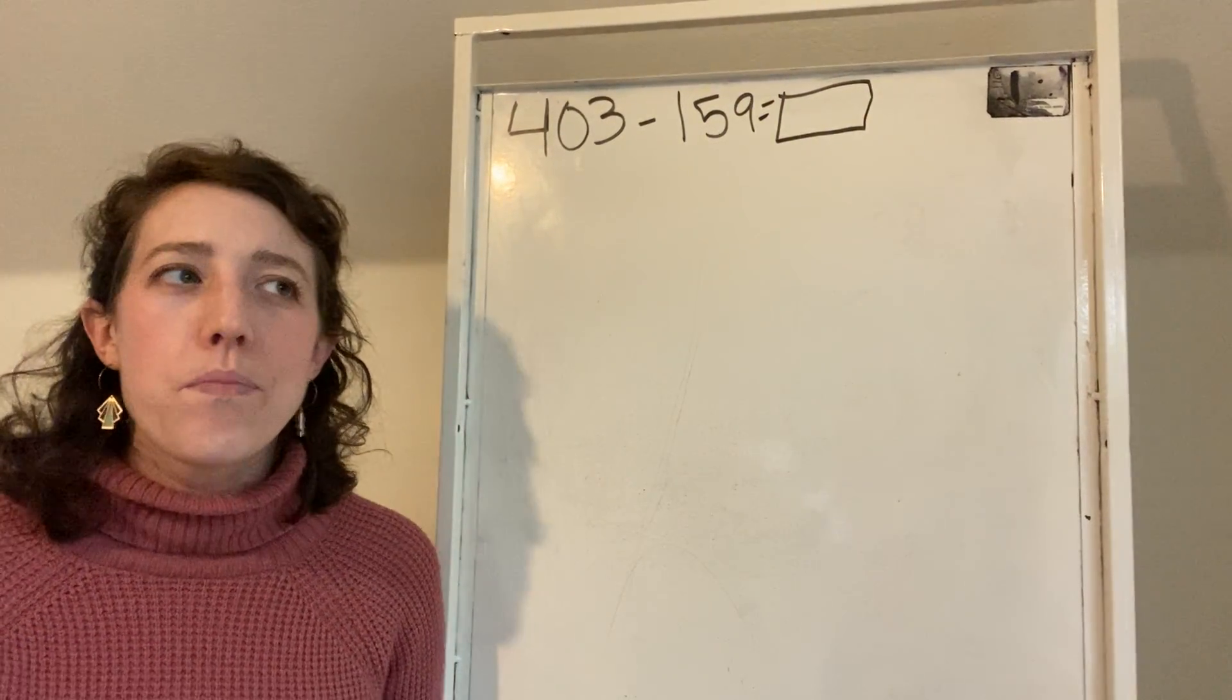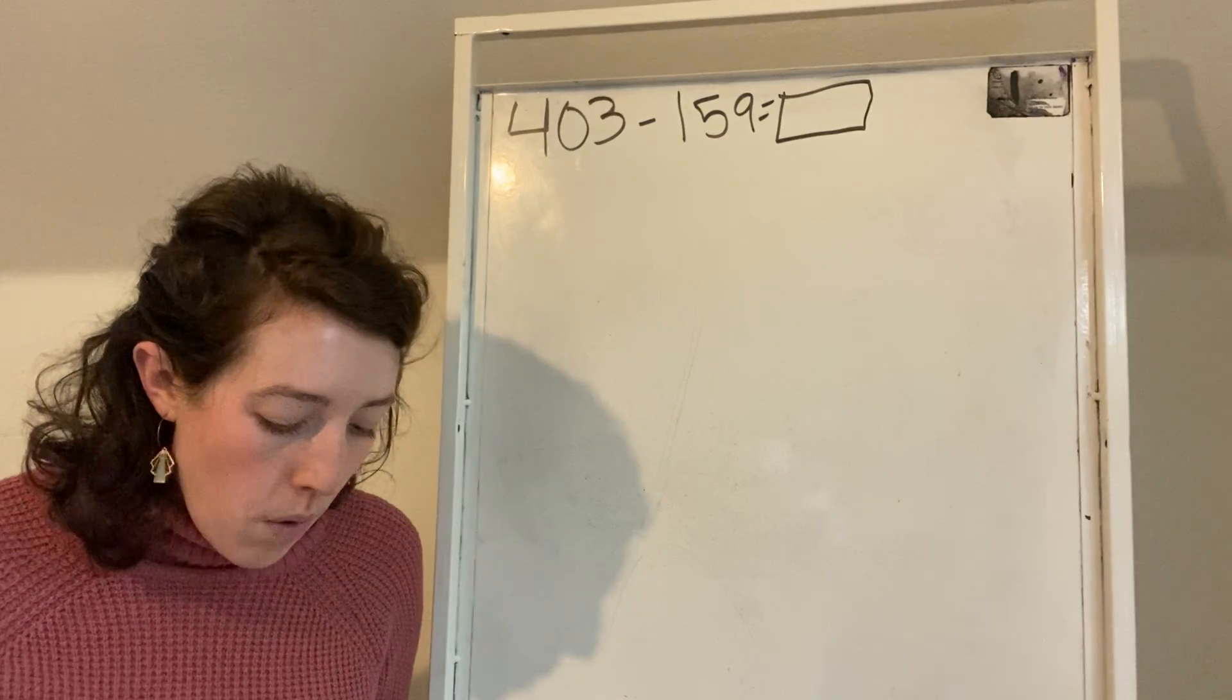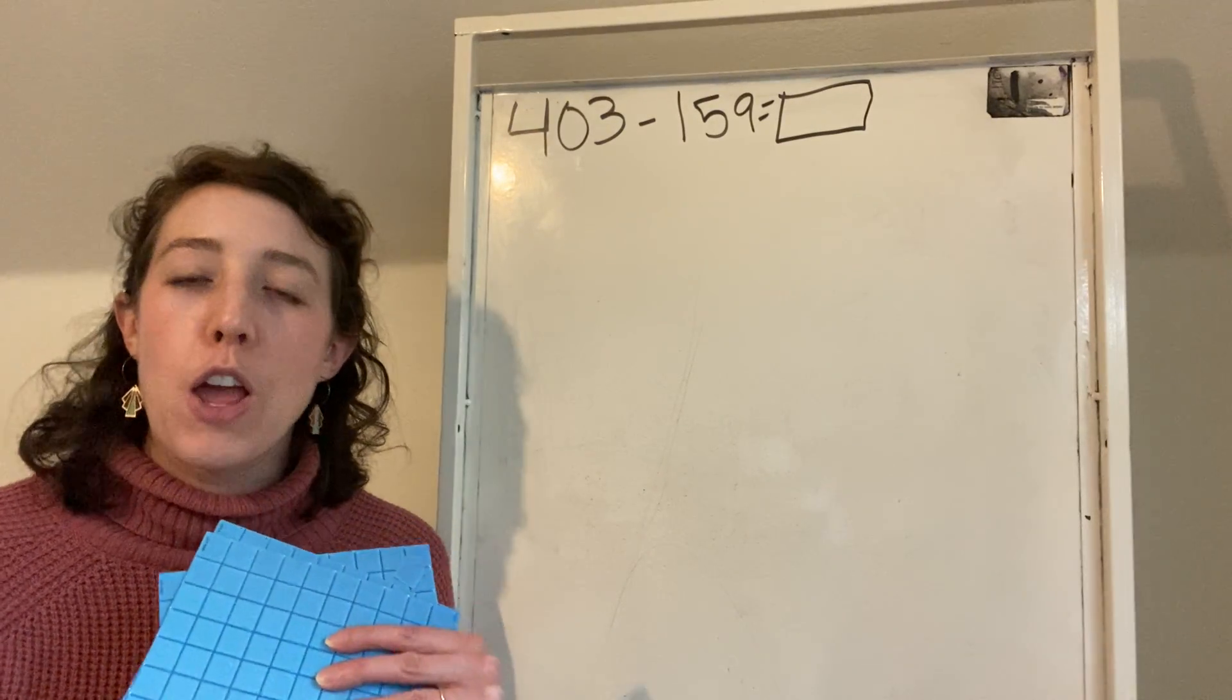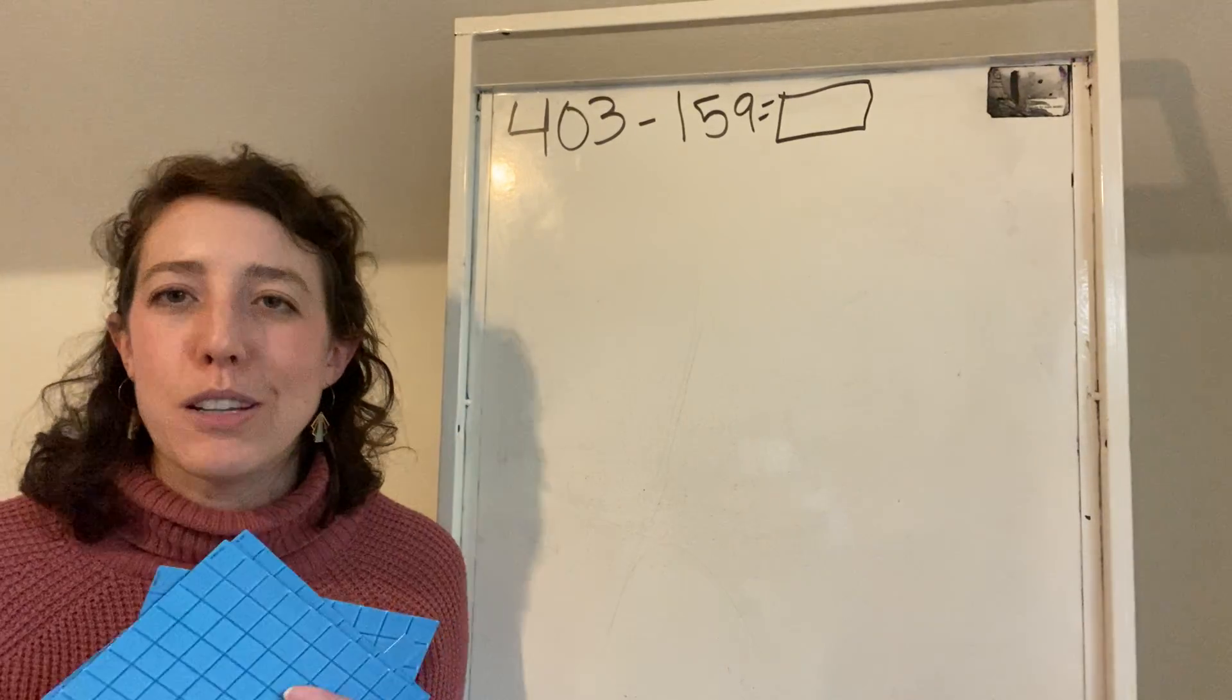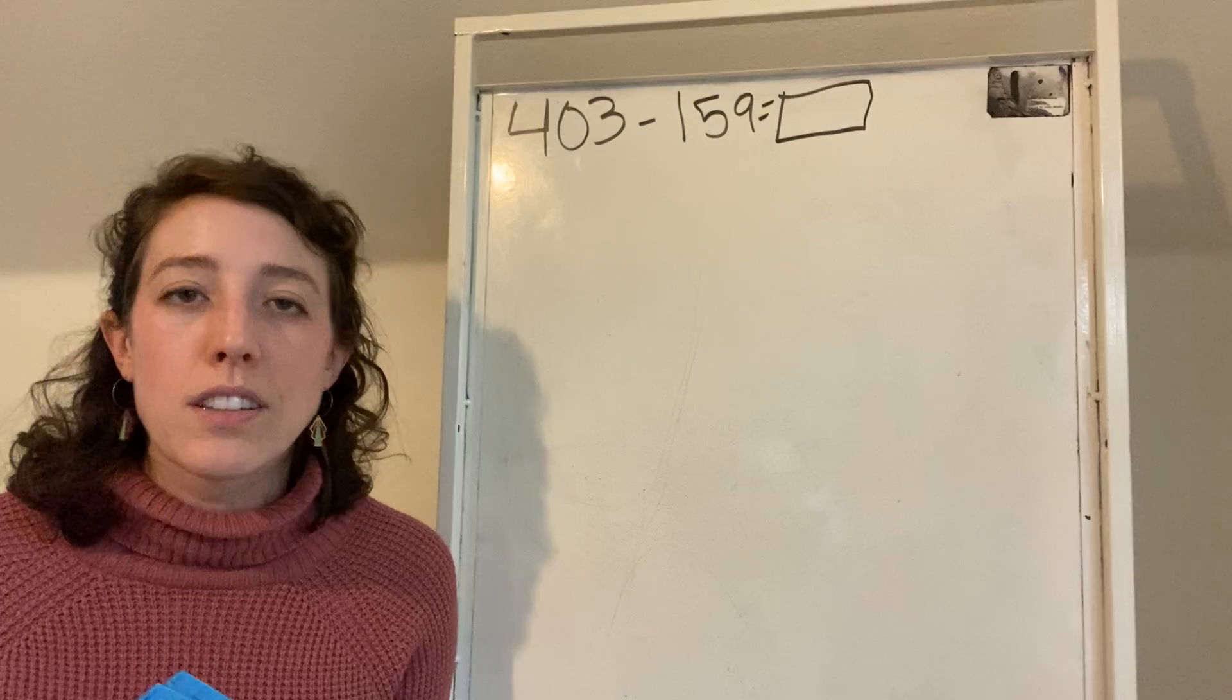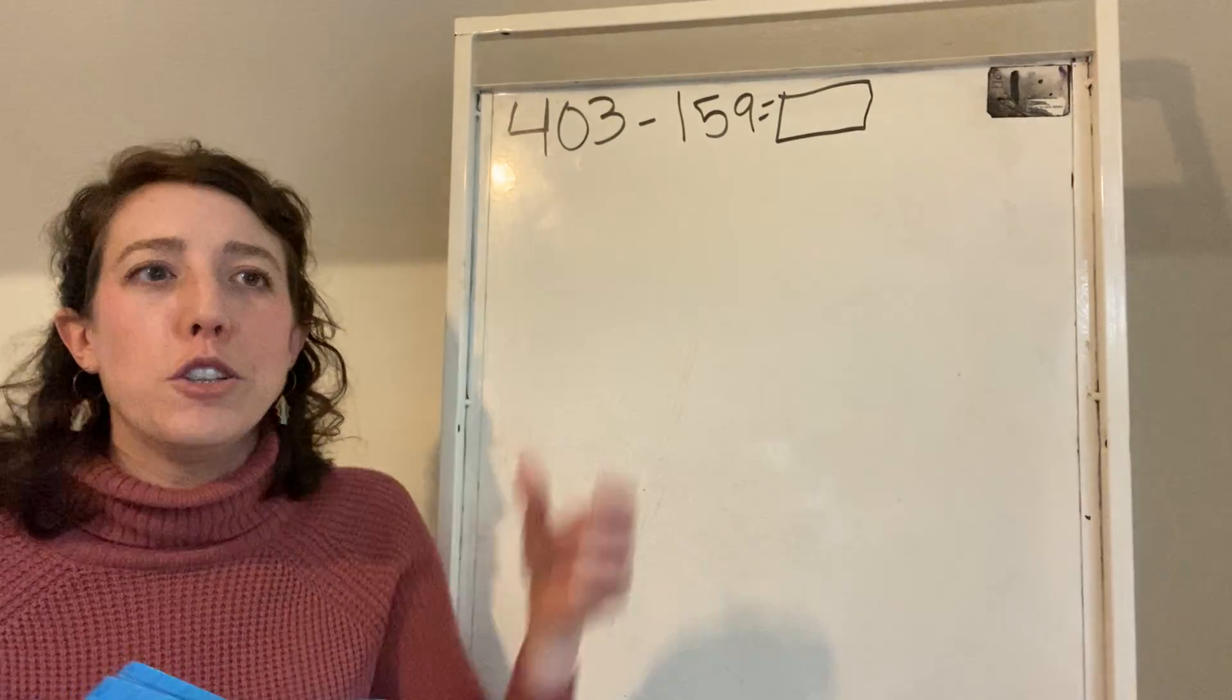So have you ever used a picture or math manipulatives to solve a problem? What we're going to do today is I actually have magnetic math manipulatives. So we're going to solve this kind of like using a picture, except I'm going to use these magnetic math manipulatives, but I'm also going to make sure that I label them. So first things first, if we're subtracting, we're going to start by building our first number, 403.